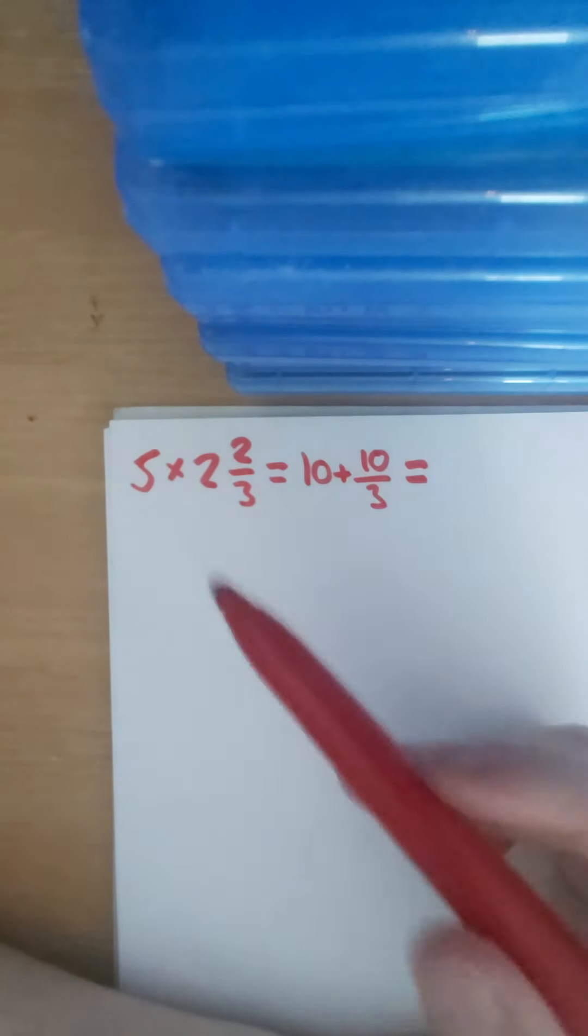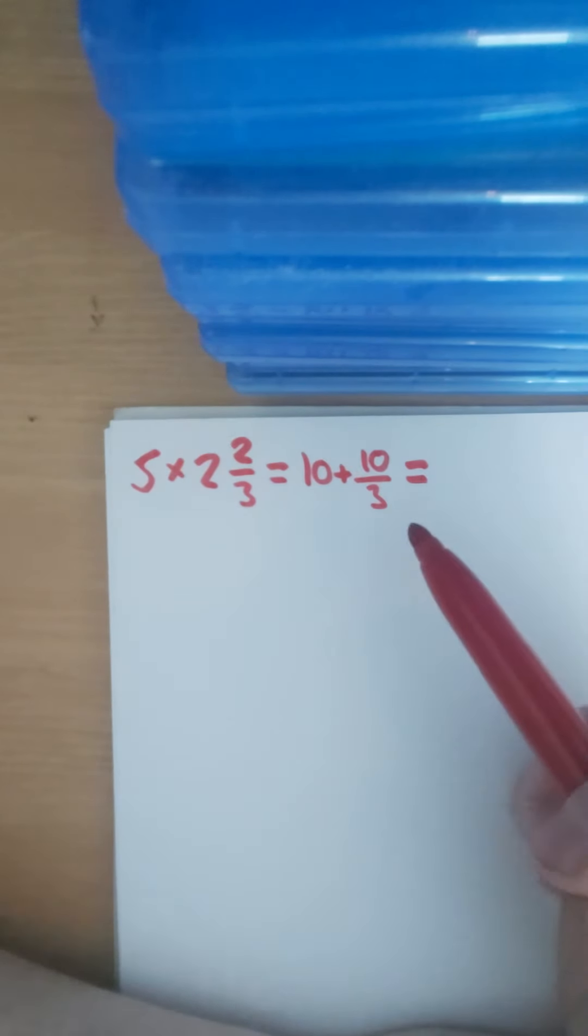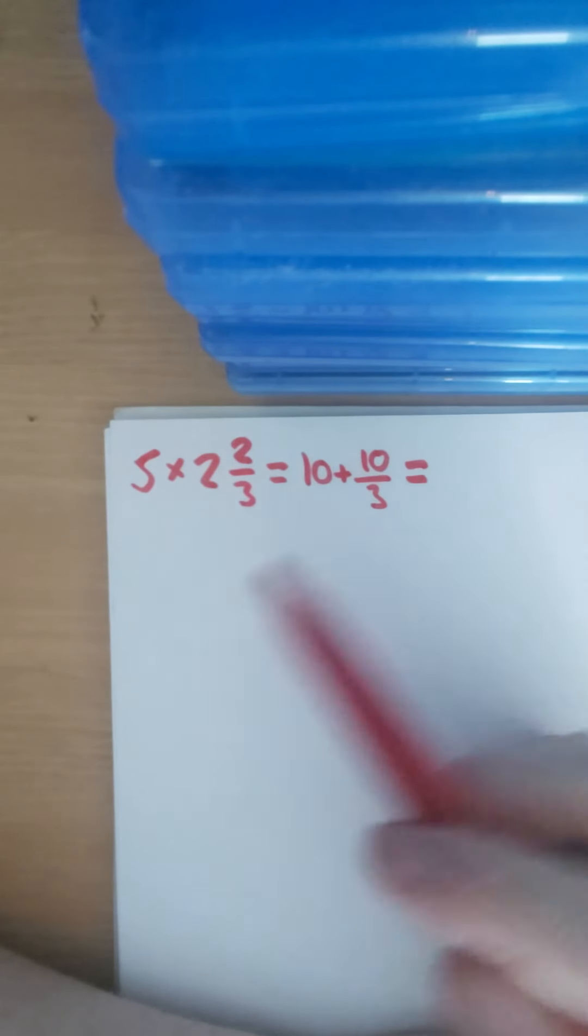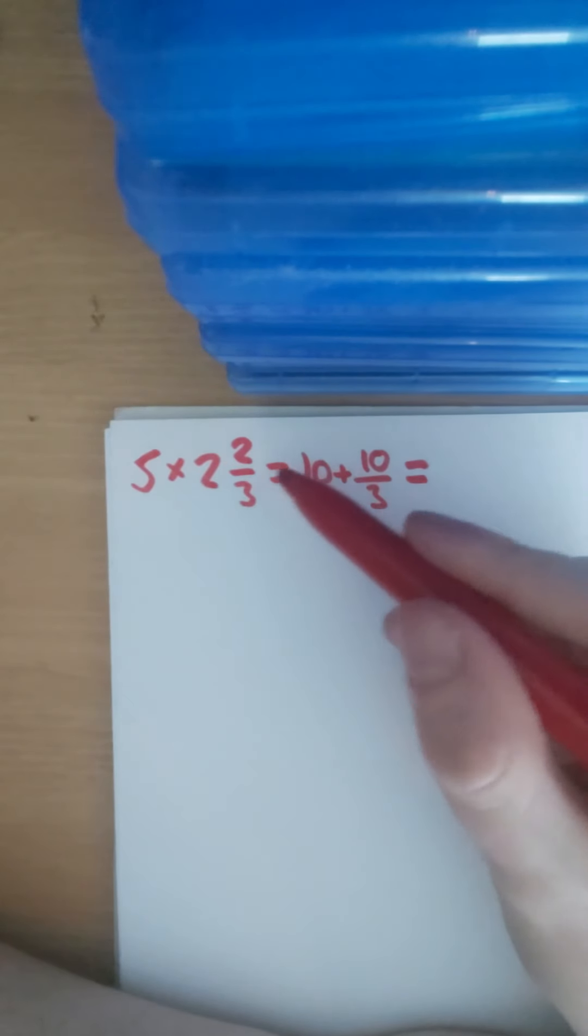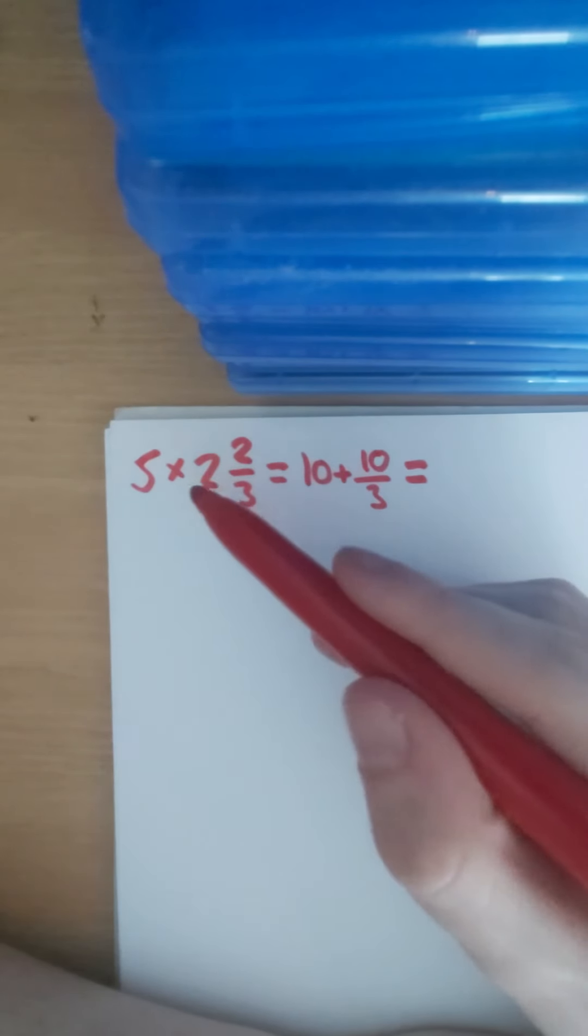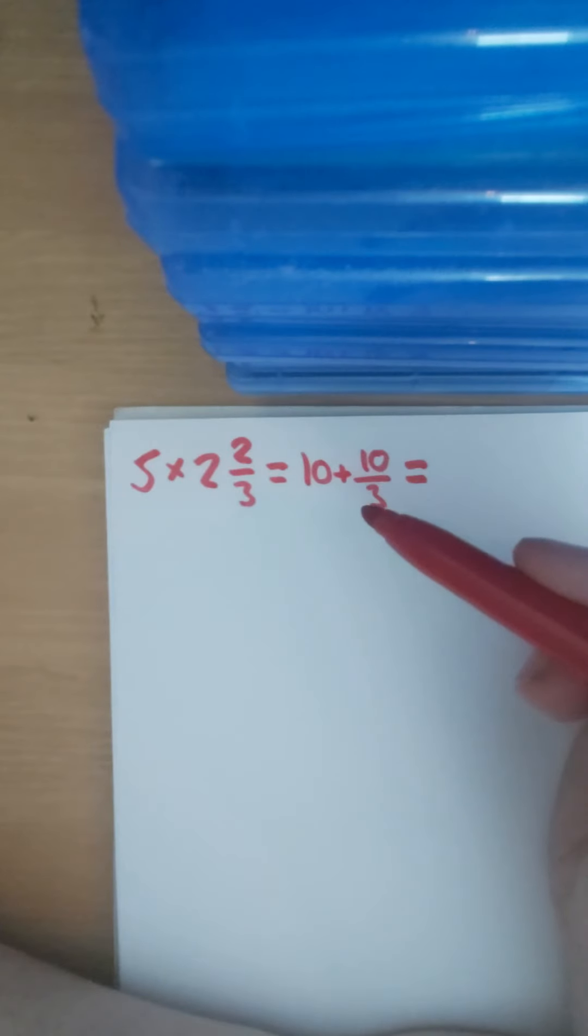Alright, so part two. This question comes up later on in the tasks. This looks really complicated, but it's not too bad once you know what's going on. We've got to remember these equal signs mean this is the exact same as this, this is worth the same amount as this part here.